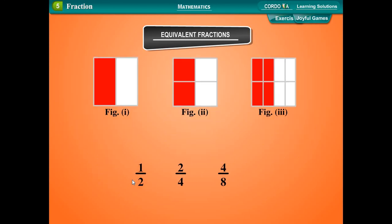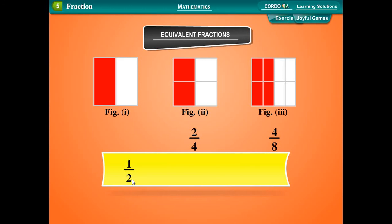If we place the pictorial representations one over the other, they are found to be equal. The fraction 1 upon 2 can be expressed as 2 upon 4, 4 upon 8, and many other ways. We can write: 1 upon 2 = 2 upon 4 = 3 upon 6 = 4 upon 8 = 5 upon 10, and so on.